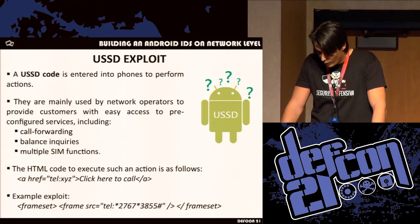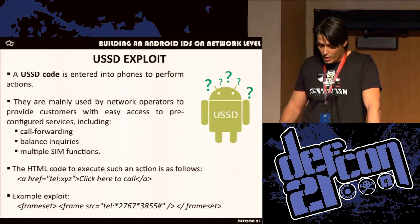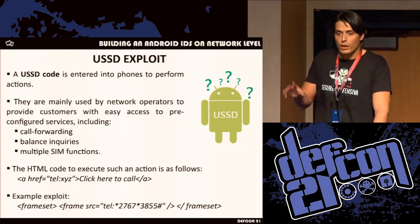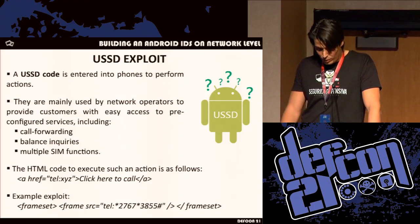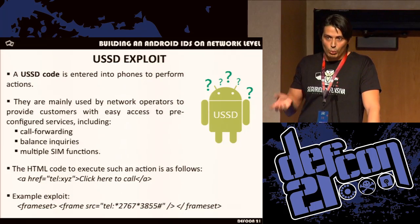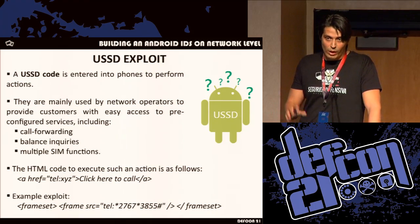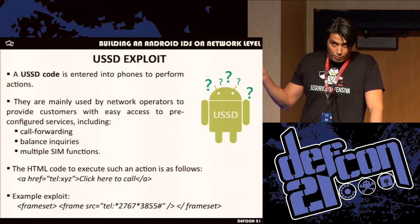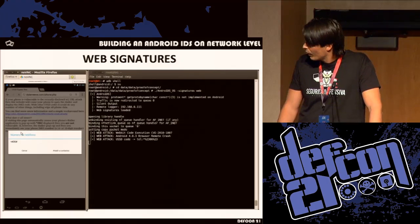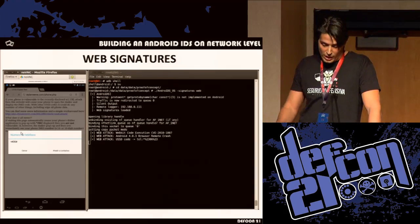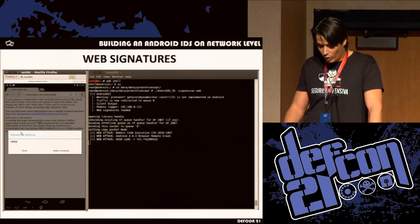One of the exploits I've addressed is the USSD code. The USSD code is a code entered into your phone to perform actions — it's used by network providers to give users access to services like call forwarding. It links the browser to the phone application, meaning that when you visit a web page containing this code, the phone, without human interaction, will launch the phone dialer application. This exploit was published about a year ago. We have several web signatures and can detect it. In the demo, it has detected a WebKit code exploit and an Android browser remote crash. You can detect the payloads and almost everything you want.